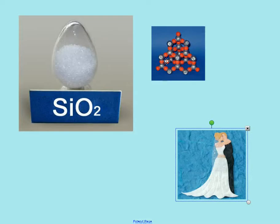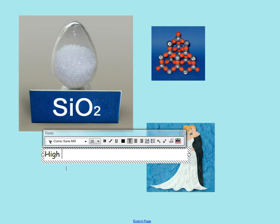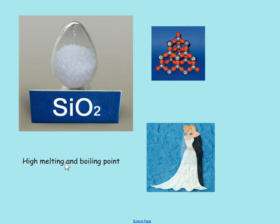Especially at higher tier, you also need to know silicon dioxide. Again, all atoms love each other, so the amount of energy needed to split them up is huge — it has a high melting and boiling point, the same as diamond really. Silicon dioxide is covalently bonded with really, really strong bonds that you can't get apart.